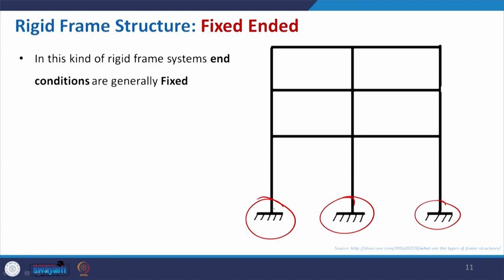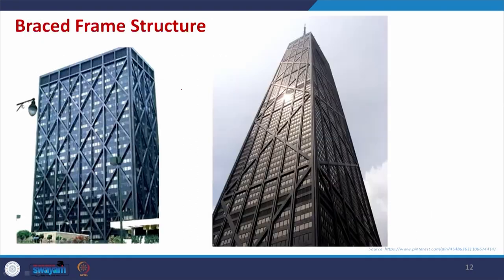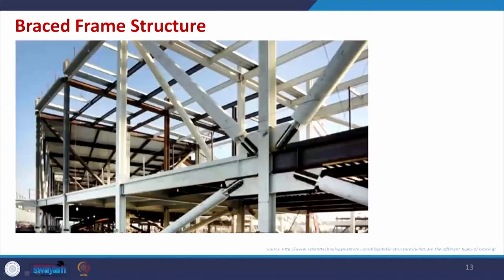In this kind of rigid frame system, end conditions are generally fixed, not the pin one. Coming to the brace frame structure — in this case along with the frame we have some structural bracing. You can see that this building has some vertical structure, along with that connected with some additional bracing, which will help this building to protect against the lateral load.